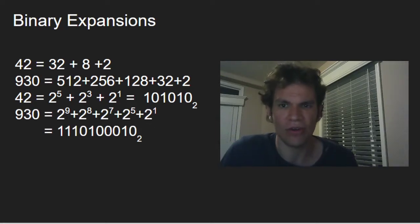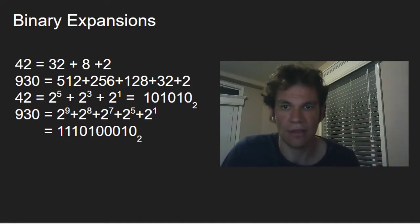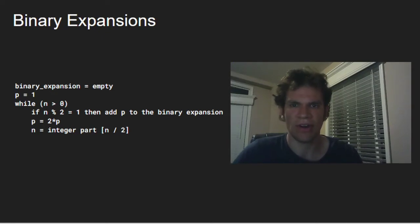Then a faster way to getting the binary expansion, it could be going from bit by bit. First checking if the number is odd or even, then checking the next bit, then the next bit and so on from right to left. Summarizing, that could be the algorithm.